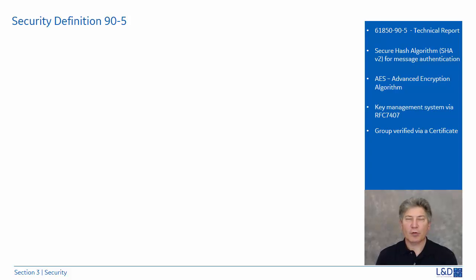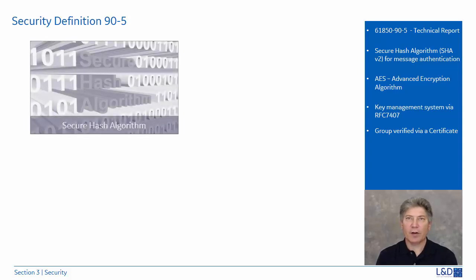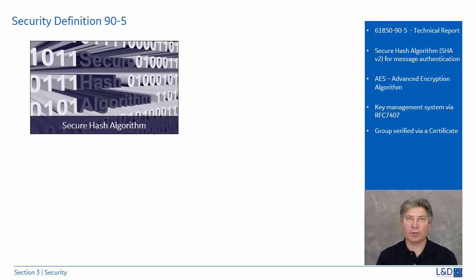The technical report 61850-90-5 defines how the routable GOOSE must be secured over a wide area network. First, it defines a secure hash algorithm. It uses SHA-2, known as Secure Hash Algorithm version 2, which is used for message authentication and integrity — similar to a CRC that places tamper detection on the message.